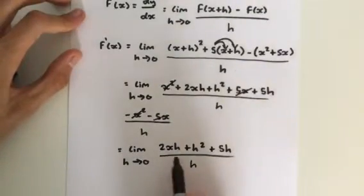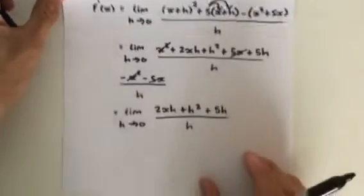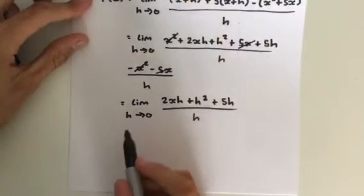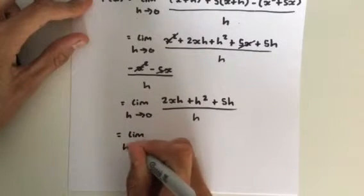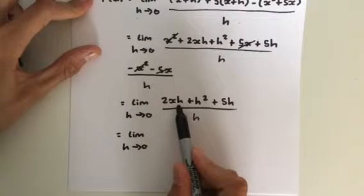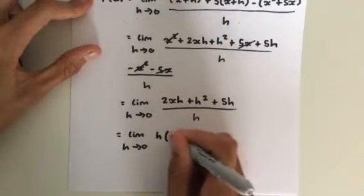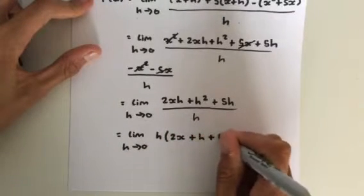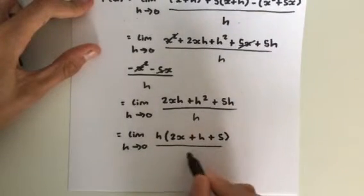Now we need to factorize the numerator. That's going to give us the limit as h approaches 0. Now we're going to factorize an h. So we get an h here outside the bracket times 2x plus h plus 5 divided by h.